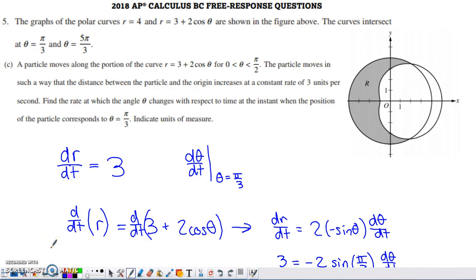In the final part, Part C talks about a particle moving along a stretch of this polar curve, only from 0 to π/2. So it's only moving along this graph from here to here, along this stretch of the limaçon. The particle moves in a way such that the distance between the particle and the origin increases at a constant rate of 3 units per second. The distance between the particle and the origin is always specified by r. If we're talking about the rate of change of r with respect to time, units per second, that's dr/dt. Since it's increasing, I assigned it as a positive rate.